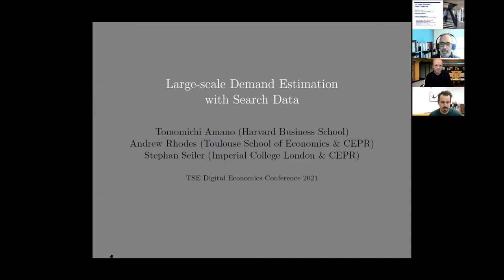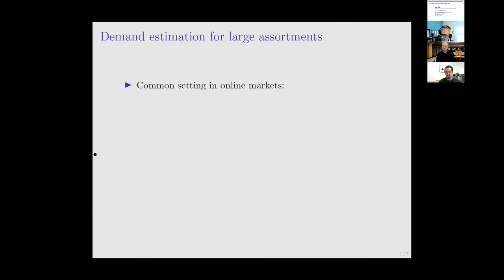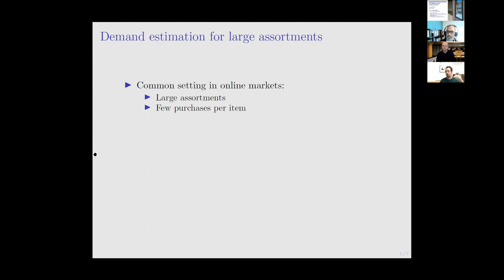Thanks to the organizers and to Heski for setting this up. What we're particularly interested in is estimating demand in large assortments - think estimating demand for the digital camera category on Amazon. In many online contexts we have large assortments, and what often comes along with that is a long right tail of products that are purchased infrequently, making it hard to learn about demand.